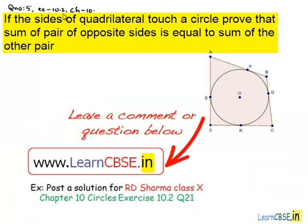Let us discuss question number 5 from exercise 10.2, chapter 10. If the sides of the quadrilateral touch a circle, prove that sum of pair of opposite sides is equal to sum of other pair. Now, coming to the solution.